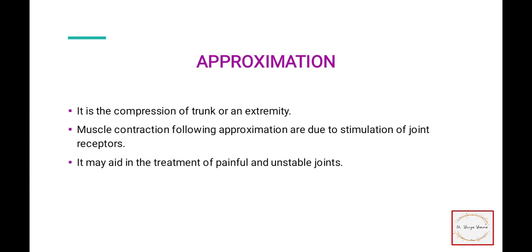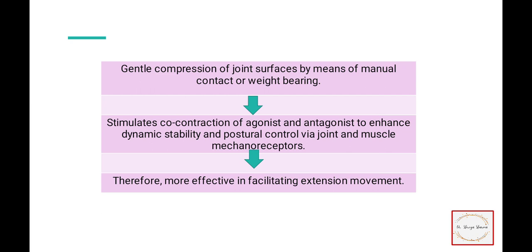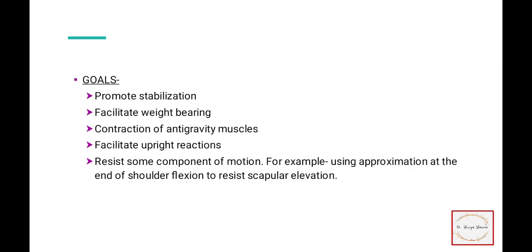Approximation is the opposite of traction — it is the compression of the trunk or extremity. Muscle contractions following approximation are due to stimulation of joint receptors. Approximation aids in the treatment of painful and unstable joints through gentle compression of joint surfaces by means of manual contact and weight bearing. Co-contractions of agonists and antagonists help maintain joint position, and dynamic stability and postural control can be increased through joint and muscle receptors. Goals include: promoting stabilization, facilitating weight bearing, contraction of anti-gravity muscles, facilitating upright postures, and using approximation at the end of shoulder flexion to resist scapular elevation.